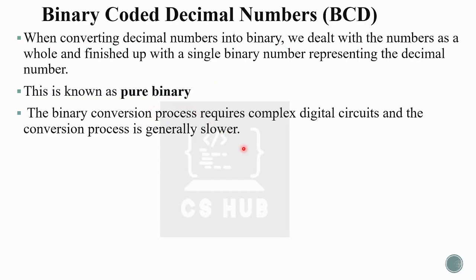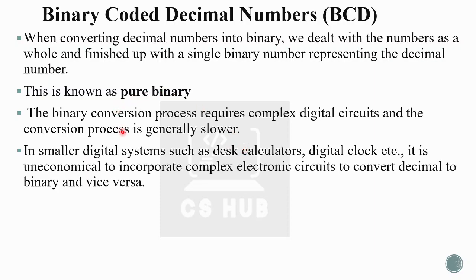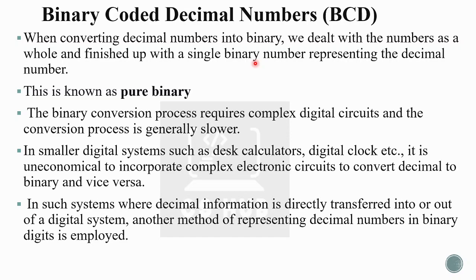Pure binary conversion requires complex digital circuits and the process is generally slower. In smaller digital systems like desk calculators and digital clocks, it is uneconomical to incorporate complex electronic circuits to convert decimal to binary and vice versa. So in such systems, another technique — BCD — is used instead.